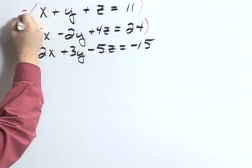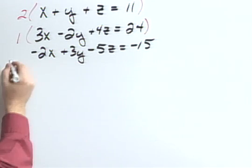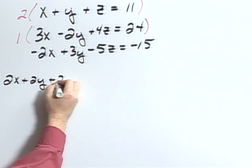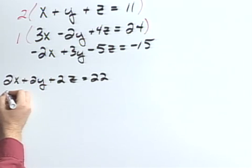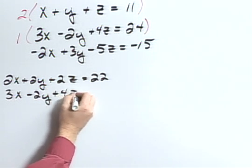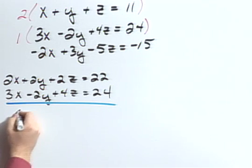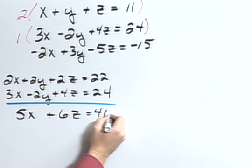So I'm going to take the first equation times 2 and the second equation times 1. That'll give me 2x plus 2y plus 2z equals 22, and then 1 times the second equation would give me 3x minus 2y plus 4z equals 24. Now when I add these two together, I notice that my y's drop out, which is what I wanted. So I have 5x plus 6z equals 46.